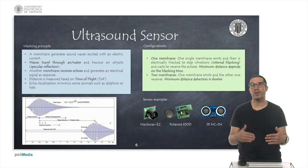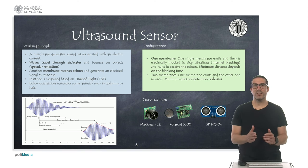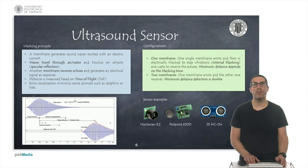And then we have a configuration with two membranes in which one of them is the one that emits and the other one is just simply the one that hears. And of course the configuration with two membranes allow us to detect distances even shorter than with one single membrane.